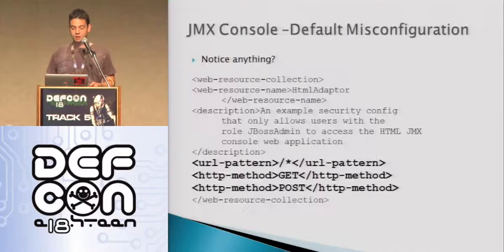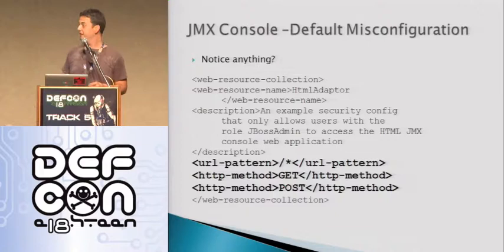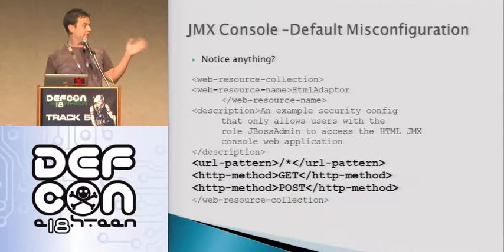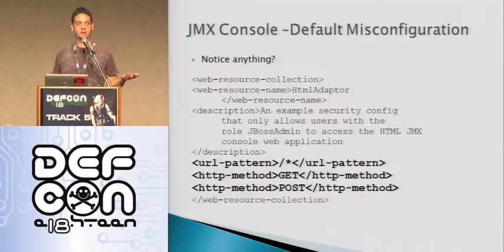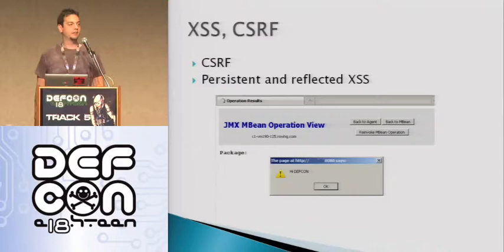This is the login config that was the default until May of this year — this came from the Minded Security blog. What's interesting is that this configuration makes the authentication apply only to GET and POST requests. For those of you familiar with HTTP verb tampering, that means I can just use a different verb that's not GET or POST and bypass your authentication. The fix for this is just to remove those two lines — just take them out.